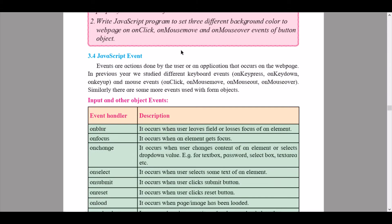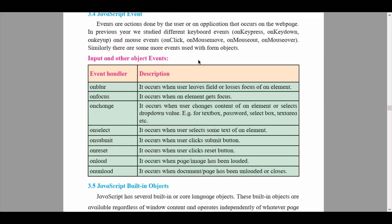We continue to Unit 3.4: JavaScript Events. Events are actions done by the user or an application that occur on the web page. In previous years we studied different keyboard events — onkeypress, onkeydown, onkeyup — and mouse events like onclick, onmousemove, onmouseout, onmouseover. Similarly, there are some more events used with form objects. Here we start with input and other object events.